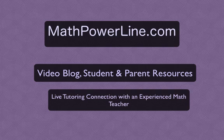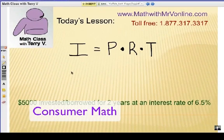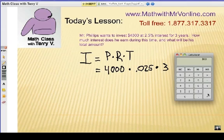Here's what it looks like from a student's perspective in my online classroom. The formula is I equals PRT. We put that in the calculator, and we're going to get $300.